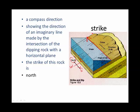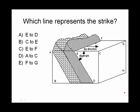You might wonder why it can't be south. The answer is it could be, but geologists like to keep things simple, so we just say north and don't worry about it. So what line here represents the strike? It would be from E to F.